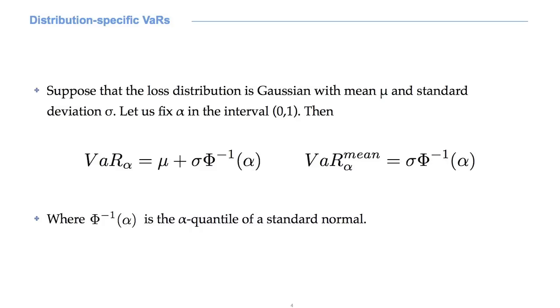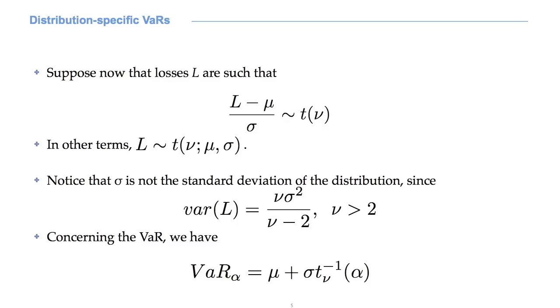For the mean VaR, naturally, the μ term disappears. And this is the formula if the loss distribution is a t distribution. Please notice the notation. Var, in small letters, is the variance and not the value at risk.